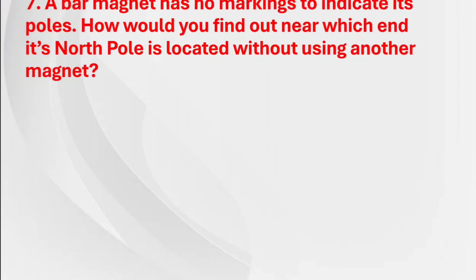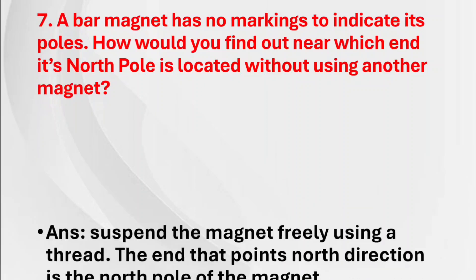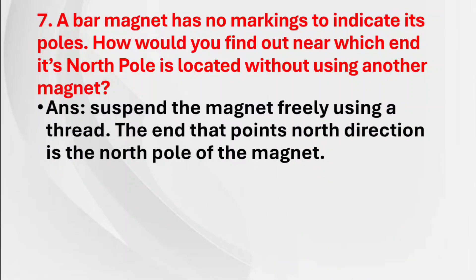Seventh question: A bar magnet has no markings to indicate its poles. How would you find out near which end its north pole is located without using another magnet? Answer: Suspend the magnet freely using a thread. The end that points in the north direction is the north pole of the magnet.